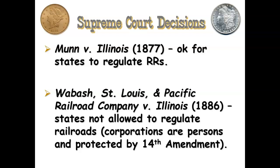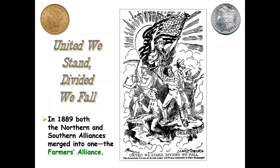It turns out that corporations are actually defined as persons and are protected by the 14th Amendment, so states cannot regulate the railroads — only the federal government can do that. This is where we see the Interstate Commerce Commission, which is generally going to be very weak. Farmers are going to continue to be antagonistic toward the railroad, which they see as providing unfair prices, especially for short distances — and that's really what farmers wanted addressed.